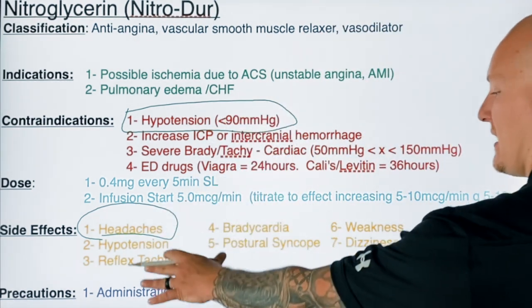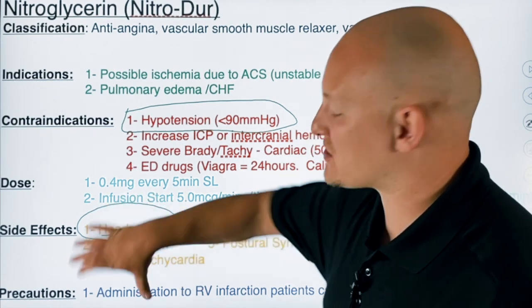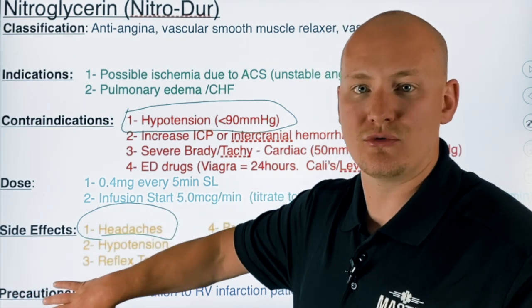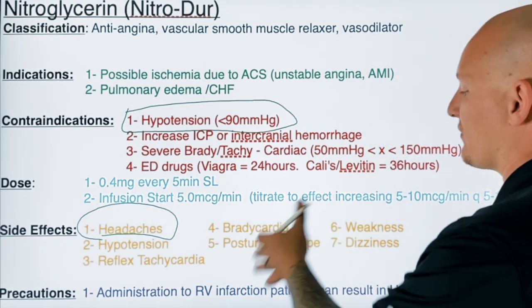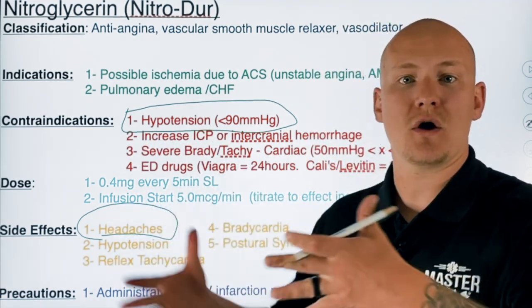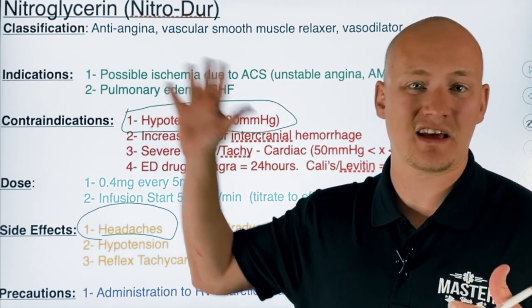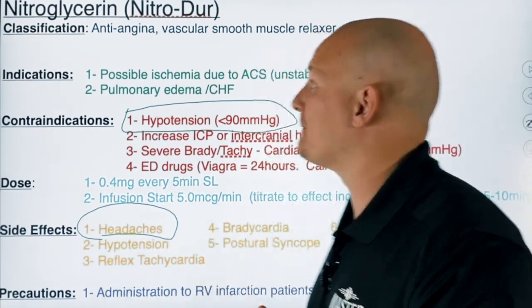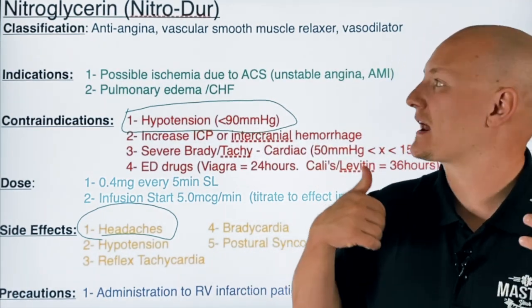One important thing to be careful with: administration in a right ventricular infarct can result in hypotension. This isn't just a precaution — it is a very detrimental thing that can happen when you use nitro in a right ventricular infarct. Be very cautious and confirm there is no right ventricular infarct before using nitro. We cover that in our inferior infarct video, which we'll tag at the end of this one.